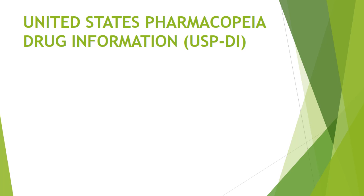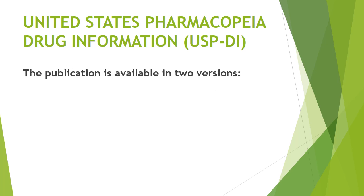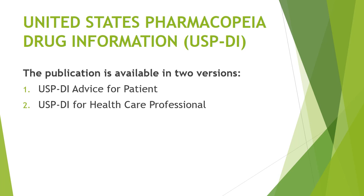United States Pharmacopoeia Drug Information, popularly known as USP-DI, is another publication used in the pharmacy department. This publication is available in two sections: the first one is USP-DI Advice for Patients, and the second one is USP-DI for Healthcare Professionals.